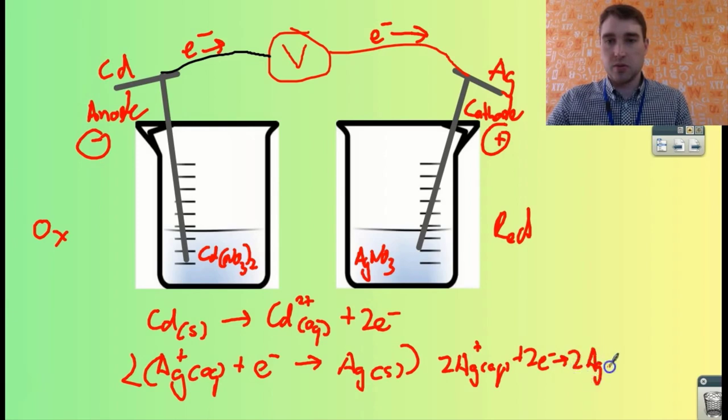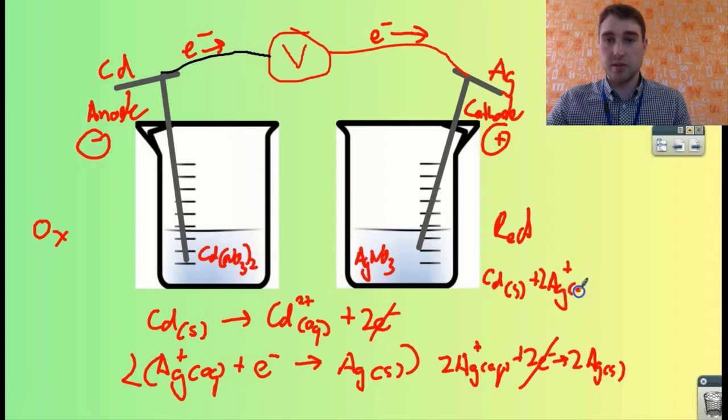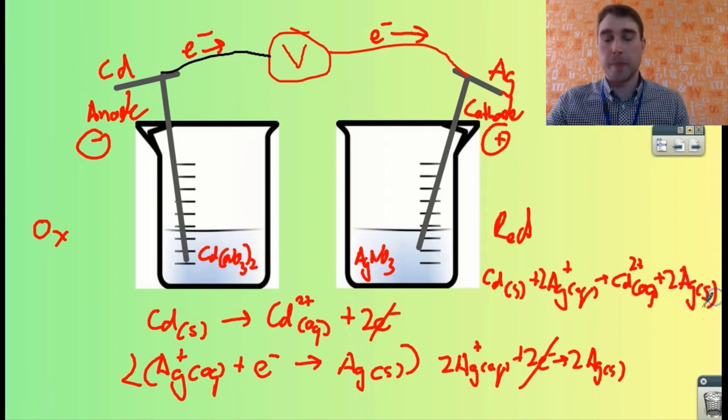Now we can write the overall equation - we cancel out the electrons which are on both sides of the arrow. So we've got cadmium solid plus two silver ions in solution goes to cadmium ions in solution plus two solid silvers. That's an example of electrochemical questions. That's it for today, see ya!